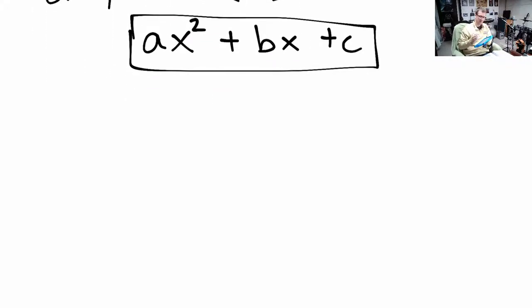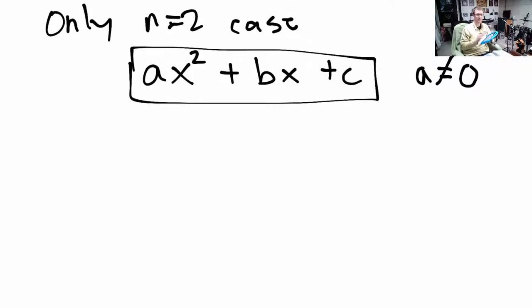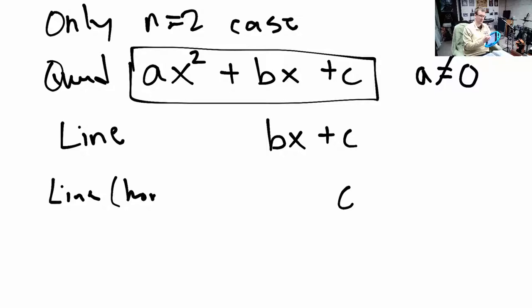We do require first that these things are not all 0. So if a was 0, this is not a quadratic. b can be 0, c can be 0, but if a is 0, then this is not a quadratic. If a is 0, then this turns into this. This is a line. This is a quadratic because it has an x squared term. This one's a line. If a is 0 and b is 0 but c is not, then we still have a line, but it's horizontal. This one has a slope. The quadratic has lots of slopes.